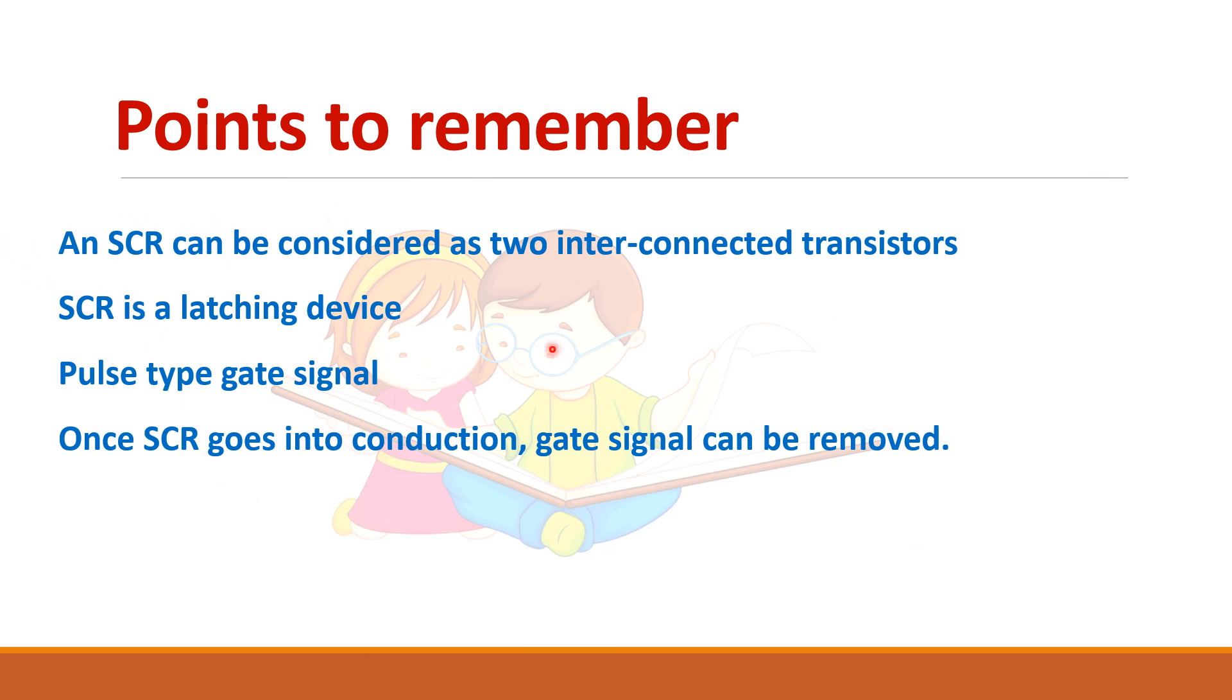So points to remember here is, SCR can be considered as two interconnected transistors. SCR is a latching device. Since you add gate signal for only a short period, you can give a pulse type of gate signal. And once SCR goes into conduction, gate has no control over it. So you can remove the gate signal so that you can avoid excess dissipation in that junction.